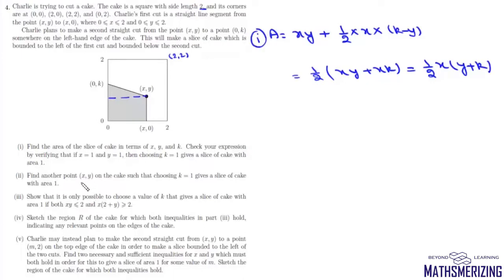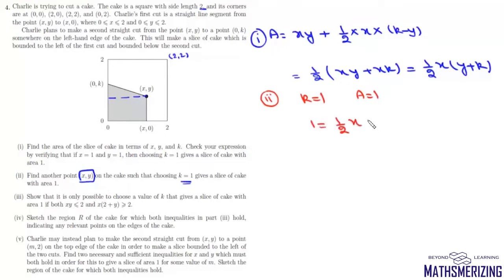For the second part, find a point (x,y) on the cake such that choosing k = 1 gives a slice of cake with area 1. We fix k = 1 and set the area equal to 1, so we write 1 = (1/2)x(y + 1), which gives x(y + 1) = 2. This is a rectangular hyperbola and has infinitely many points.